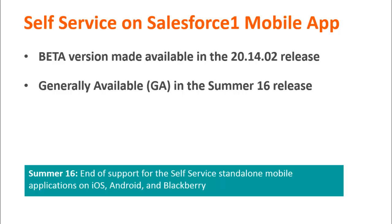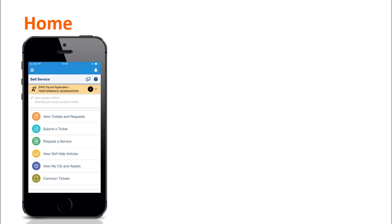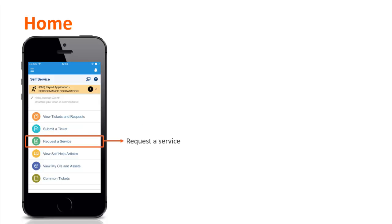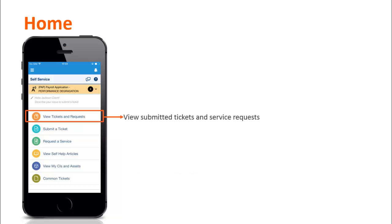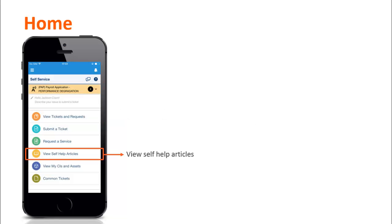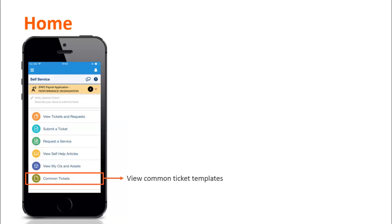Let's now take a look at the features available in Self Service on Salesforce One Mobile App. On the homepage, users can click the different tiles to perform a number of tasks such as submit tickets and requests for services, view their CIs and assets, and the tickets and service requests they have submitted, view broadcasts, self-help articles, and common ticket templates.